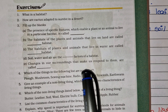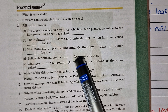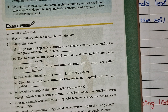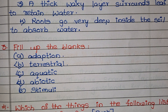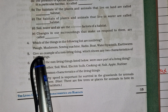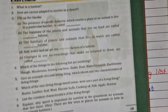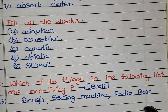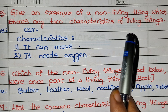The next: changes in our surroundings that make us respond to them. The fourth question is: which of the following things in the list are non-living? The next question: give an example of a non-living thing which shows any two characteristics of the living things.